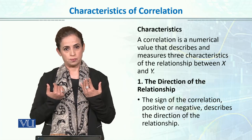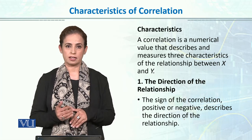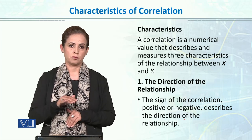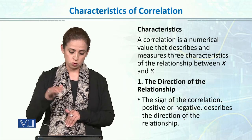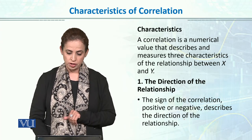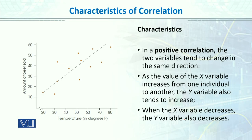Similarly, if one is decreasing and the other is also decreasing, it is again a positive correlation — when the two variables are moving in the same direction. Here is an example of positive correlation.